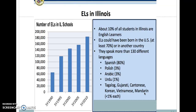About 70% of English learners are born in the U.S. The most commonly spoken language among ELLs in Illinois is Spanish at about 80%, followed by Polish at 3%, Arabic at 3%, Urdu at 1%, and a number of other languages up to 130 with smaller populations.